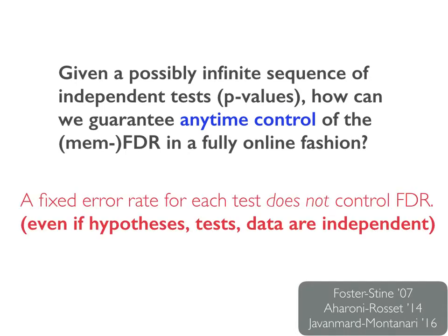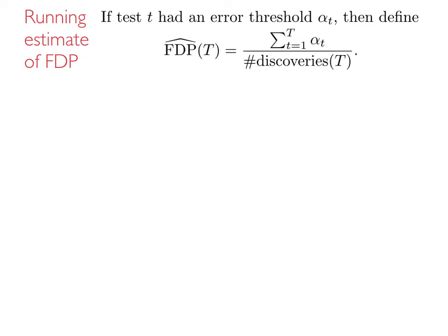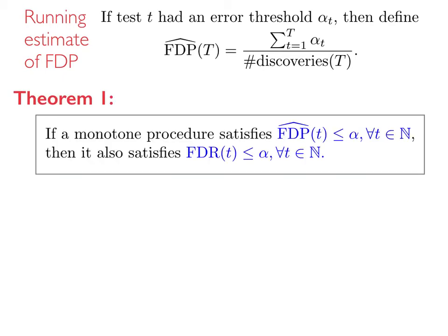An important point of note is that a fixed error rate for each test does not control the FDR, even if the hypotheses, tests, and data are independent. We first define a novel but simple running estimate of the FDP. If the test at time t had an error threshold alpha-t, then define the estimated FDP up to time t as the sum of all alpha-t's divided by the number of discoveries up to time t. Our first contribution is to prove that if a monotone procedure has its estimated FDP always below alpha, then its FDR is also always below alpha. This gives a simple way to derive new online FDR procedures.